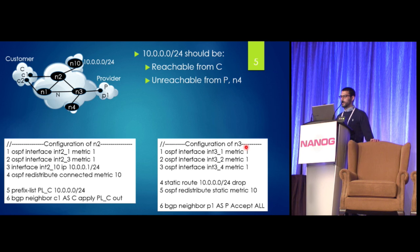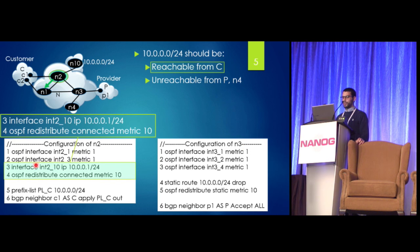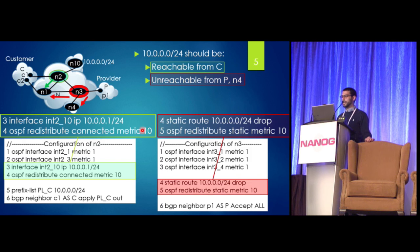And I've implemented this using these configuration snippets that you see at the bottom here. So in order to make 10.0.0.0 reachable from C, you can see lines 3 and 4 on the left for the configuration of N2 here. What we do is basically this is a directly connected network for N2. And for whatever reason, the operator has decided to redistribute this connected network into OSPF with the metric that you see here. And that's to provide connectivity to 10.0.0.0. To make it unreachable from everywhere else on N3, the operator in lines 4 and 5 has installed a static route that just drops all traffic for 10.0.0.0 and redistributes that static route on line 5 so that its neighbors will basically send traffic there to be dropped.